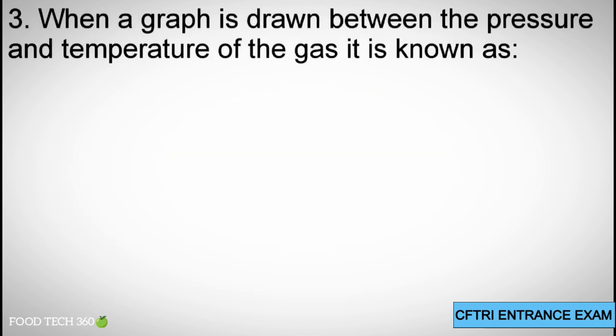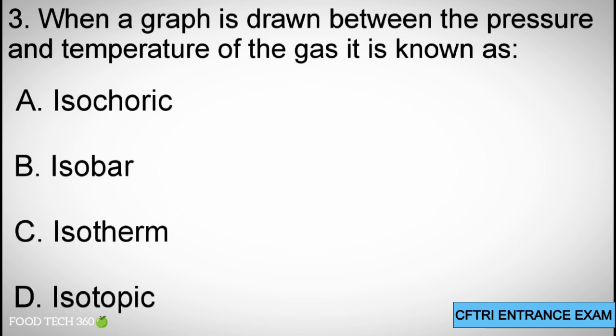Question 3: When a graph is drawn between the pressure and temperature of the gas, it is known as: A. Isochoric, B. Isobaric, C. Isotherm, D. Isotopic. Correct answer: A. Isochoric.